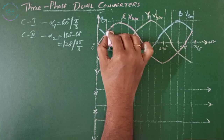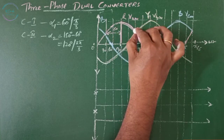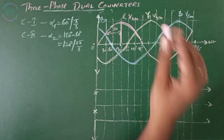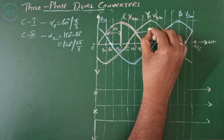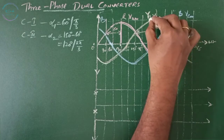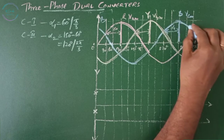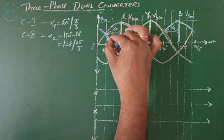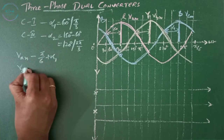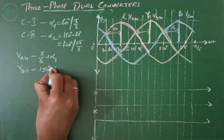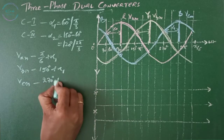In converter 1 with firing angle 60 degrees, VAN starts conducting after 60 degrees. Similarly, VBN starts conducting after 60 degrees. VBN starts at 5 pi by 6 plus alpha 1, VCN starts at 150 degrees plus alpha 1, and VAN starts at 270 degrees plus alpha 1.